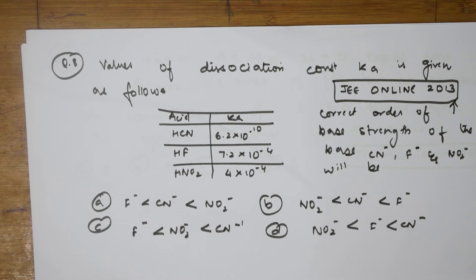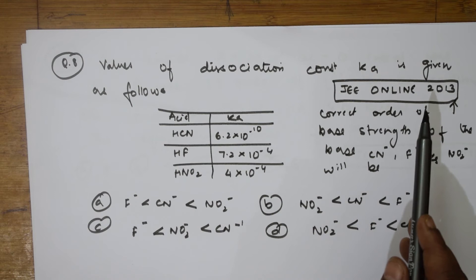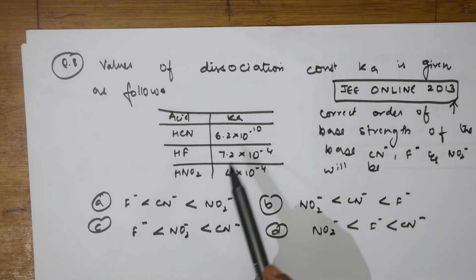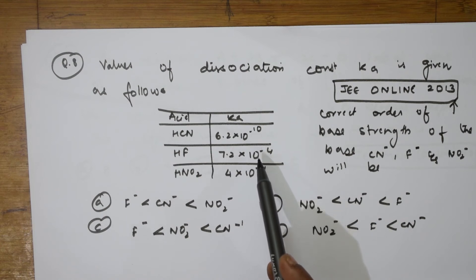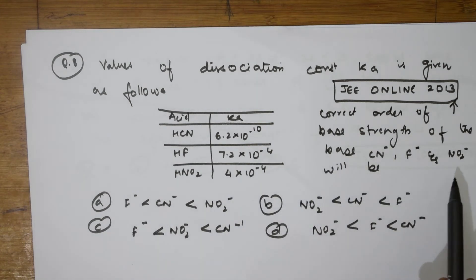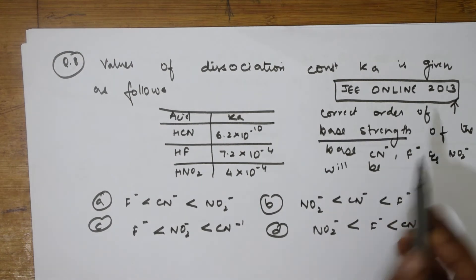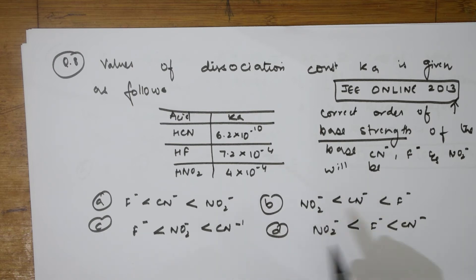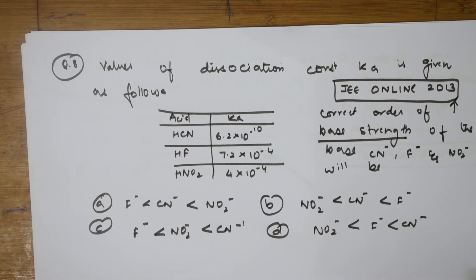Let us do the 8th question now. In the 8th question, what did they give me? They have given me values of dissociation constant Ka is given as follows. This particular question is given in JEE online 2013. They have given values for acid and their Ka values, acid dissociation constant values. Now, the correct order of the basic strength of the base CN^-, F^- and NO2^- will be. They have given us option A, B, C and D. I need to find the correct order of the basic strength. When such question is given to you, let us learn one important thing.